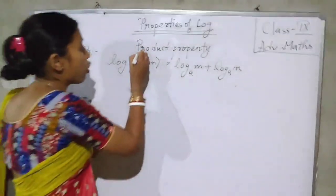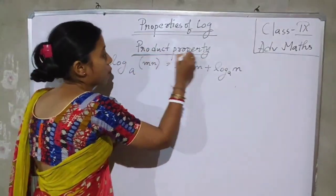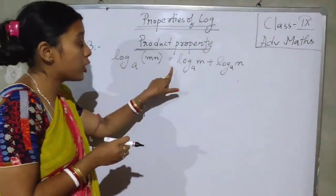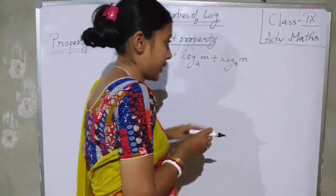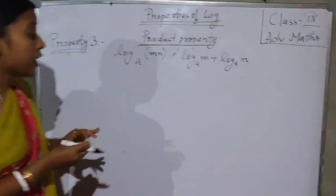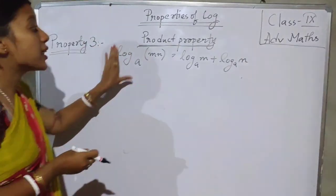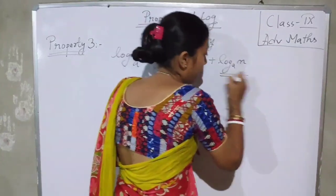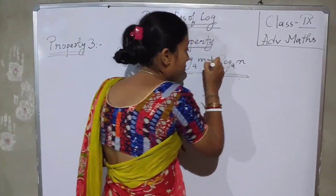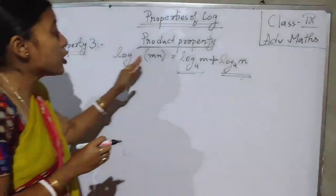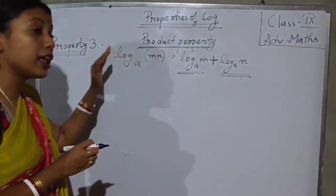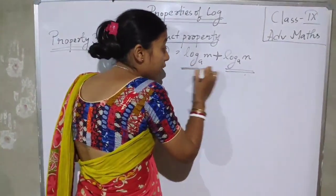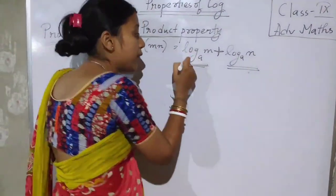Now property 3, this is called the product property: log M times N base A is equal to log M base A plus log N base A. If two numbers are multiplied and we are taking log of them, then we can split both of them, and in the middle there will be addition.